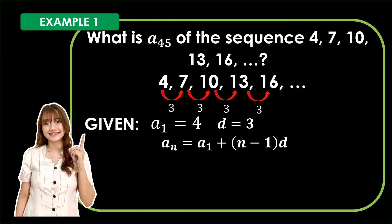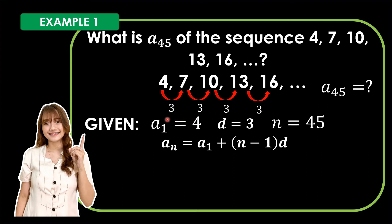Now, as mentioned, we want to get the term's location. Going back to our problem: What is a sub 45 of the sequence 4, 7, 10, 13, 16, and so on? It is clearly stated that we are going to find the 45th term. So the term's location is 45, or n is equal to 45. We now have: first term is 4, common difference is 3, and term's location is 45. Now substitute these values into our formula.